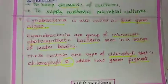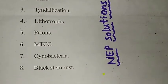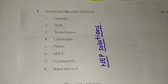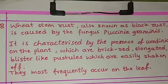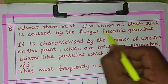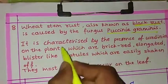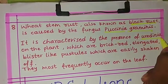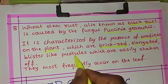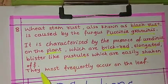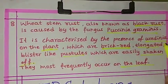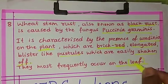The eighth and last question is about black stem rust. Wheat stem rust, also known as black rust, is caused by the fungus Puccinia graminis. It is characterized by the presence of uredinia on the plant, which are brick-red, elongated, blister-like pustules that are easily shaken off. They most frequently occur on the leaf part of the plant.